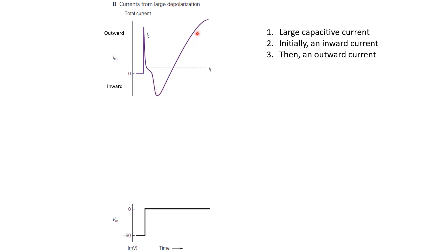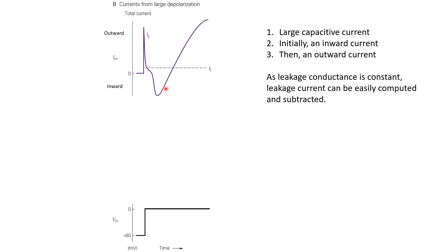Because leakage currents do not change over time — they must be constant — this current that is changing with time should be due to the voltage-gated channels. The leakage and capacitive currents can be easily removed from this profile: the capacitive current is present only at the beginning, and the leakage current is constant and can be calculated from the given voltage. So we will have the ionic currents remaining. Can we resolve what part of this current is due to sodium channels and what part is due to potassium channels?